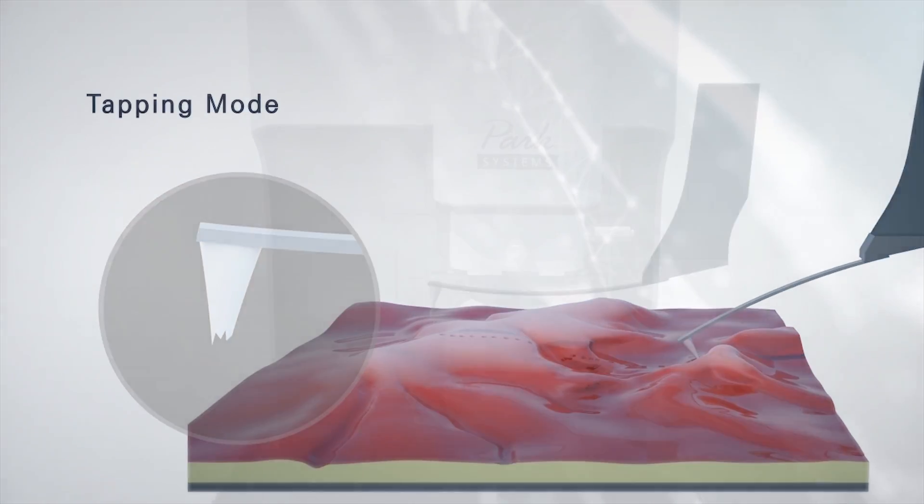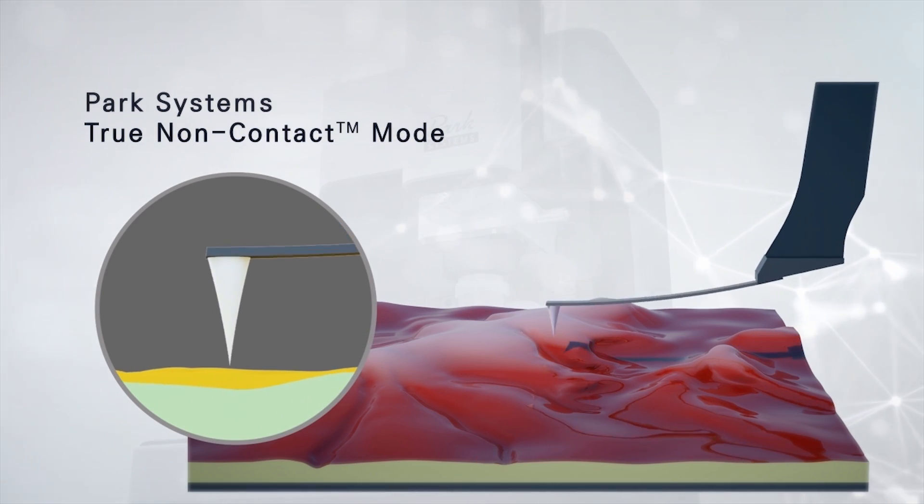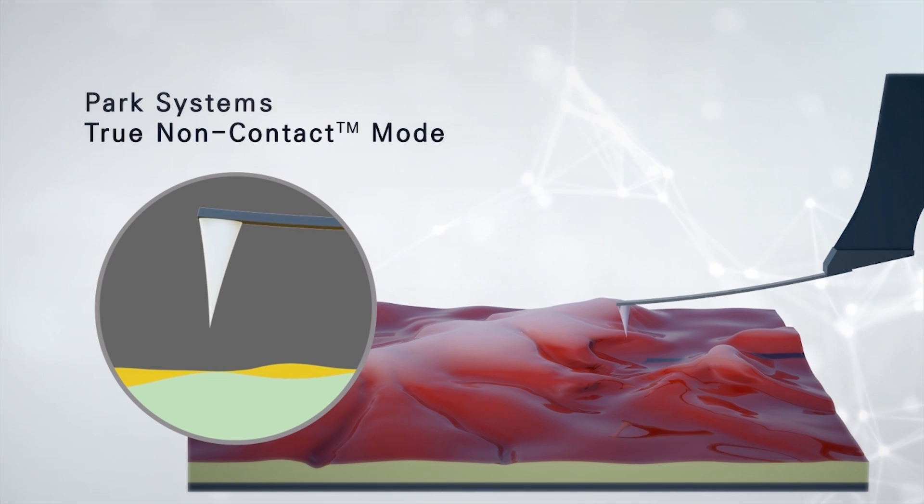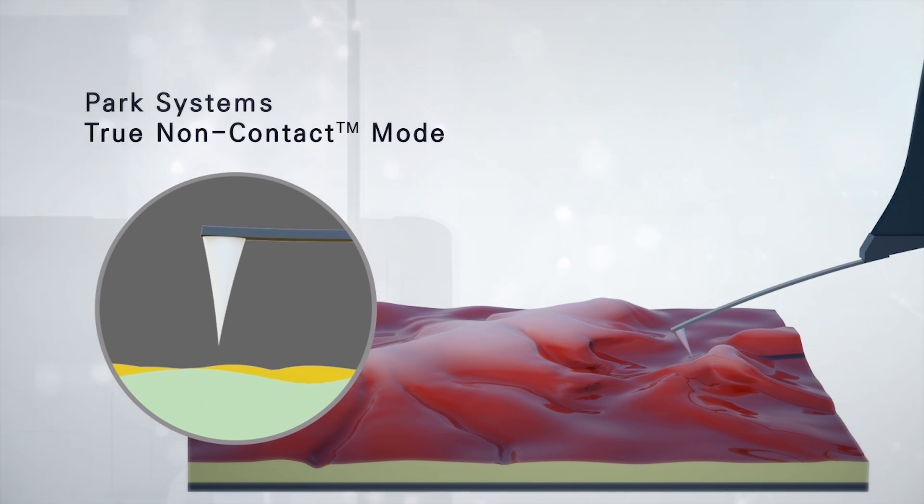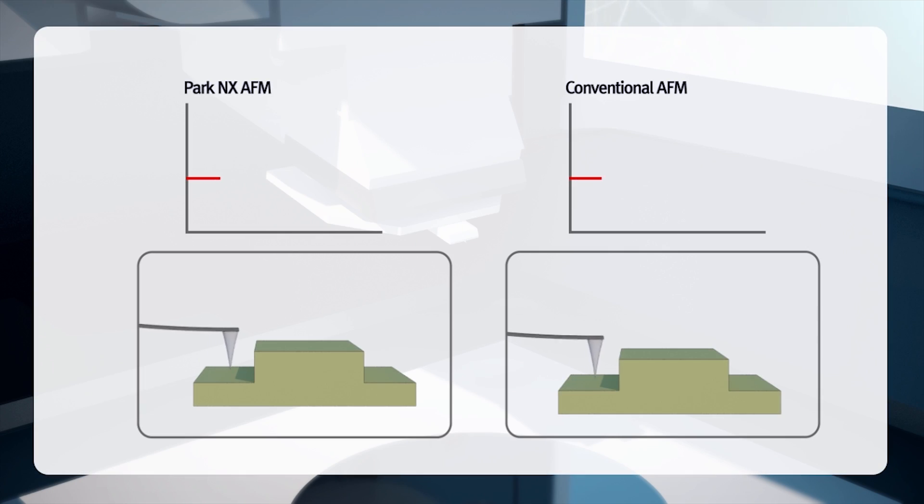However, AFM measurements with Park Systems' true non-contact mode involves no contact between the tip and sample, thus no sample damage and almost no tip blunting, enabling accurate measurement over many scans and greatly lowering related tool upkeep costs. In addition, with the development of a high-performance Z detector which effectively reduces noise, sample surface details smaller than a nanometer can be accurately measured without any creep effects at feature edges.